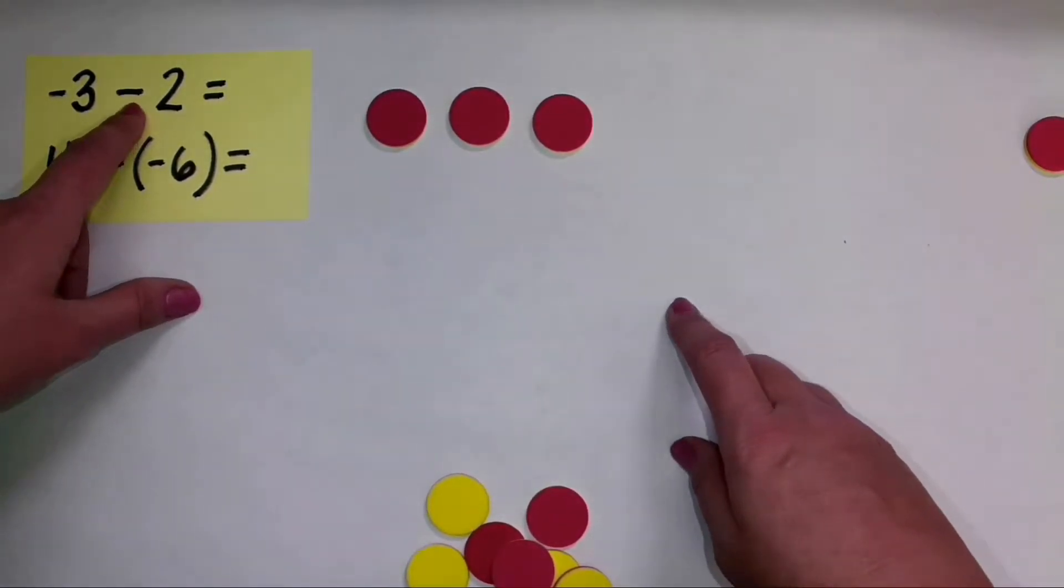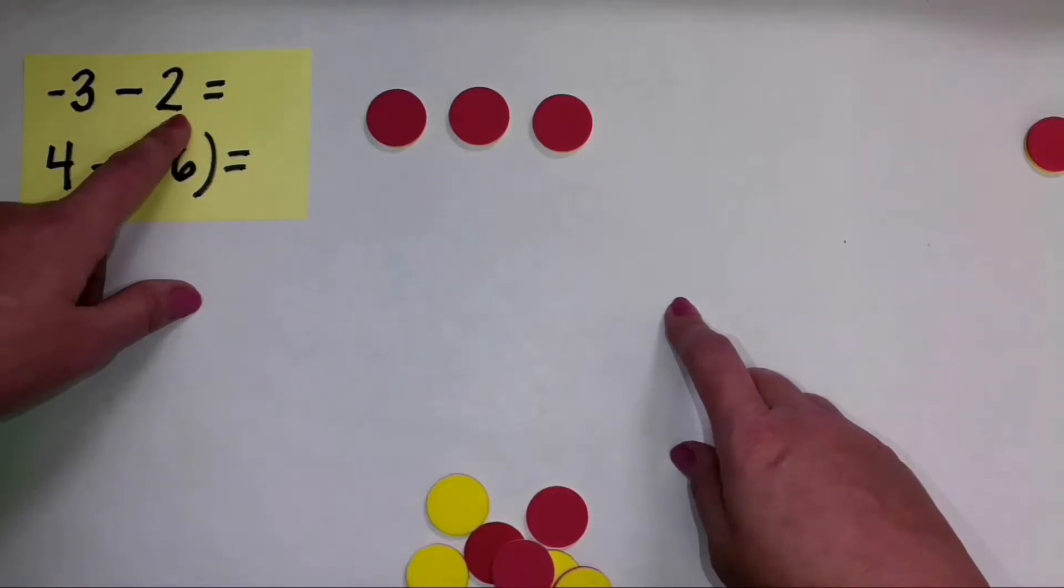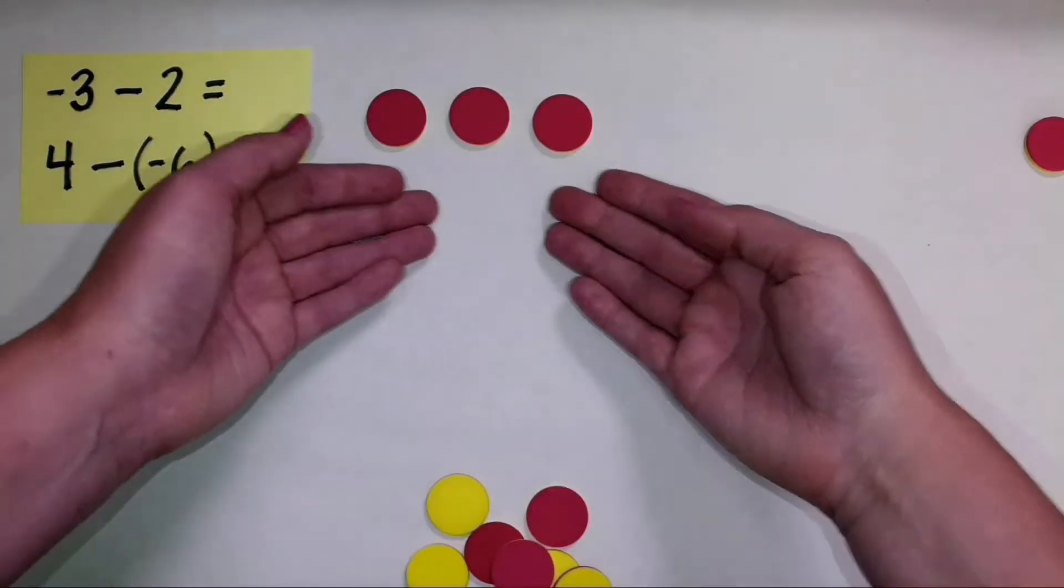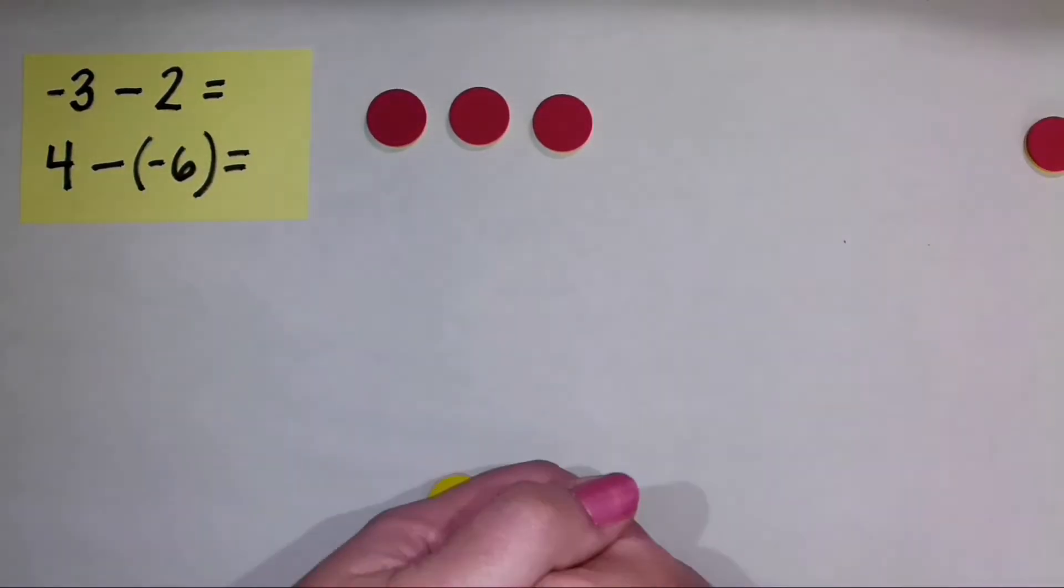Now I need to subtract two. The important thing to do here is to interpret this two. This two is a positive two, because there's not a negative symbol directly in front of it. So I have to subtract positive two. The question is, right now, do I have positive two to subtract? No I don't.